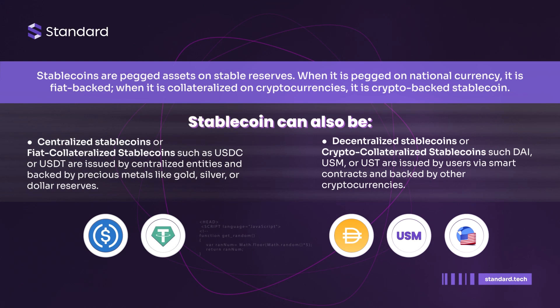Stablecoin can also be centralized. Centralized stablecoins or fiat-collateralized stablecoins such as USDC or USDT are issued by centralized entities and backed by precious metals like gold, silver, or dollar reserves. Decentralized stablecoins or crypto-collateralized stablecoins such as DAI, USM, or UST are issued by users via smart contracts and backed by other cryptocurrencies.